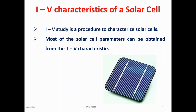Solar cell IV characteristic curves show the current and voltage characteristics of a particular photovoltaic cell, module, or array, giving a detailed description of its solar energy conversion ability and efficiency. Knowing the electrical IV characteristics, and more importantly the maximum power, i.e. P-max, of a solar cell or panel is critical in determining the device output performance and solar efficiency.